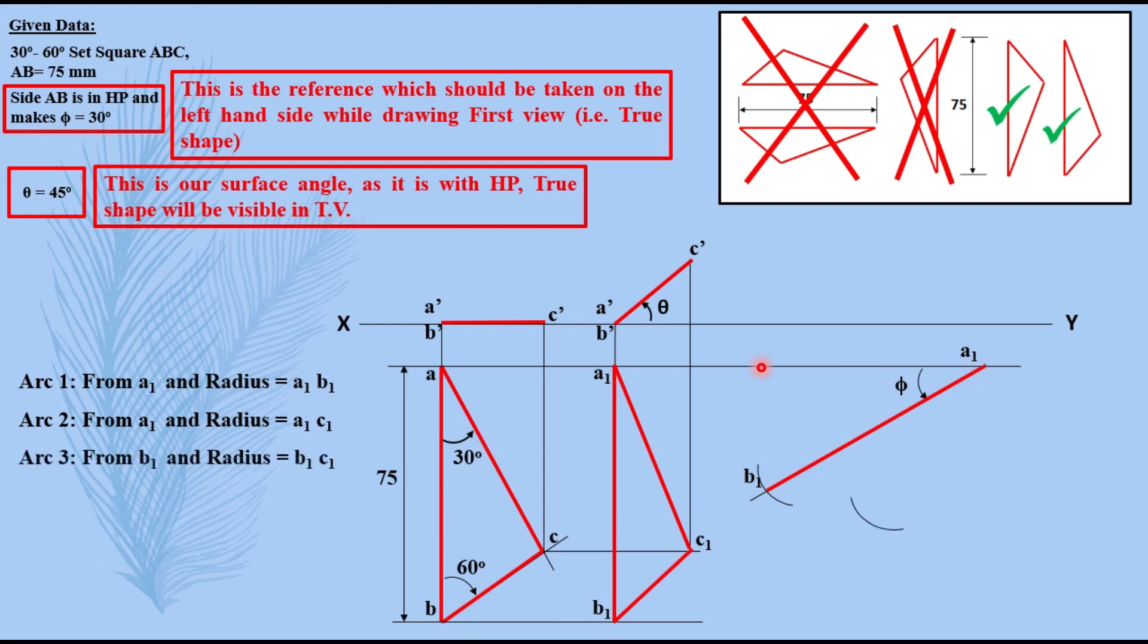Then take your compass again, take distance A1 C1 in your compass, keep compass on A1 here now, draw an arc. Again take distance B1 C1, keep your compass on B1, intersect the arc. Name it as C1, complete the triangle.